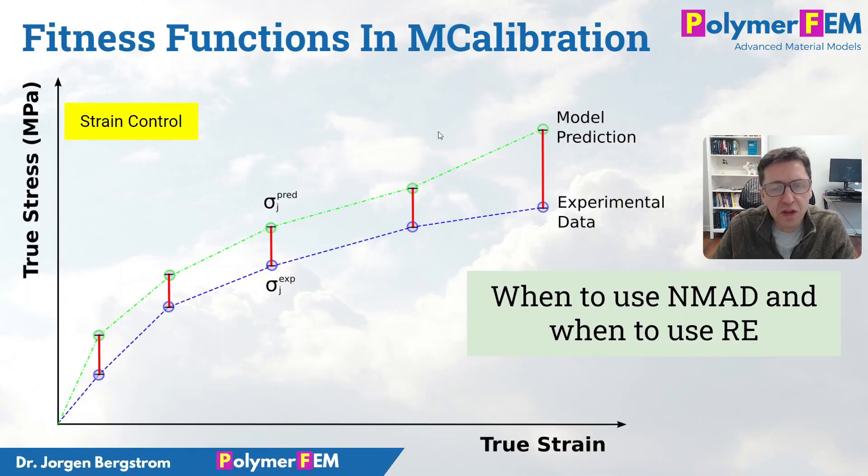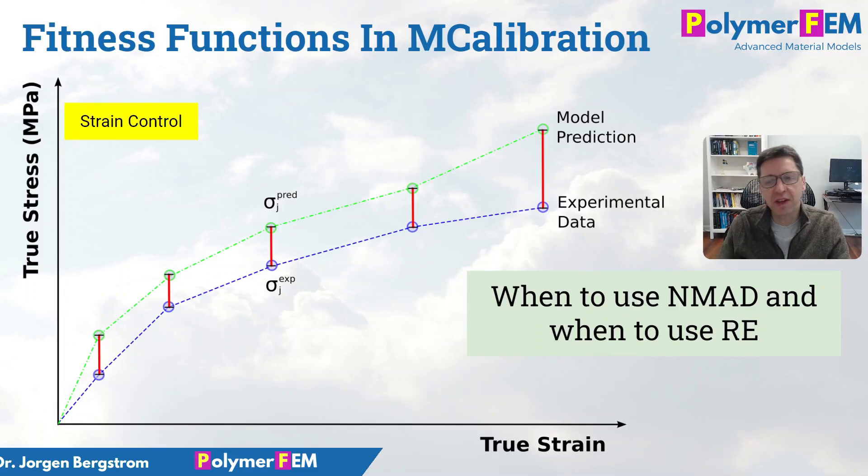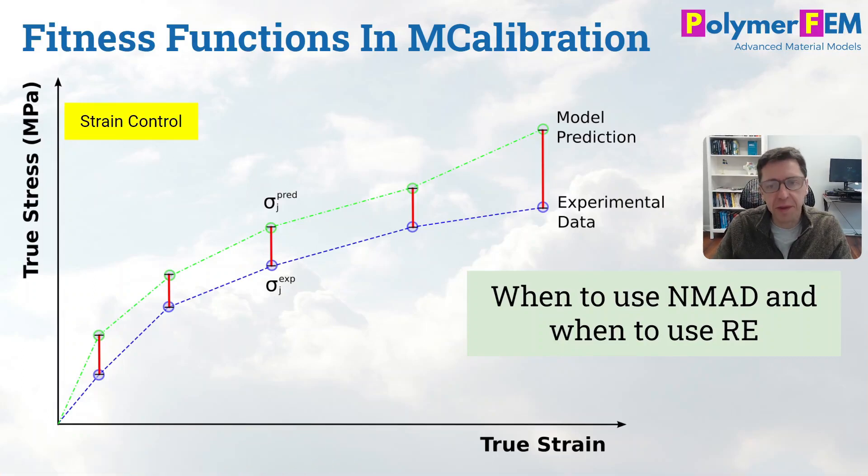Hi, today I'm going to talk about fitness functions in MCalibration. So what is a fitness function? It's a way that you can evaluate the material model, and you need to always select one from the many choices in MCalibration. Today I'm going to introduce a new one that we created this year called RE, and I'll tell you about why we created this fitness function and when you should use it.